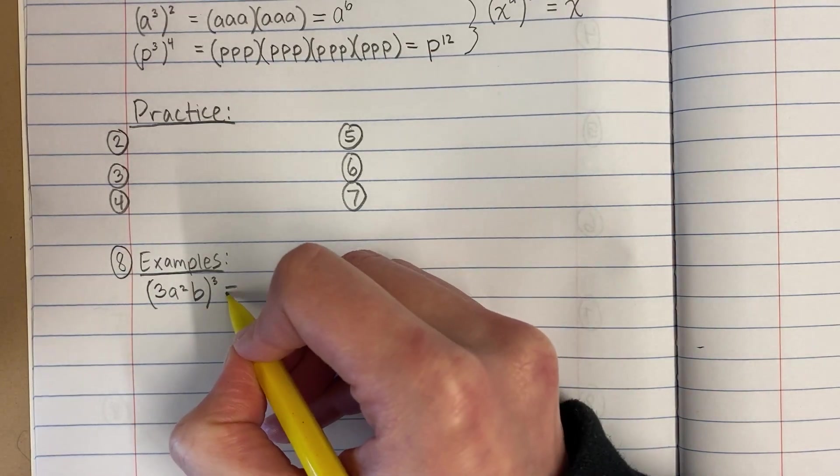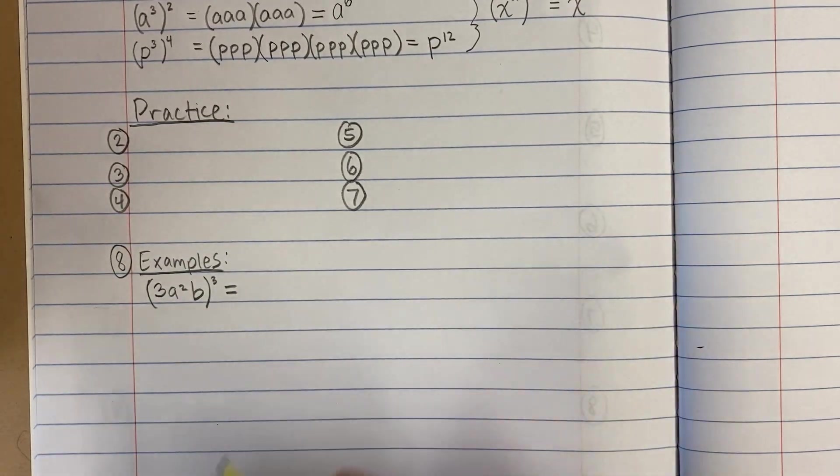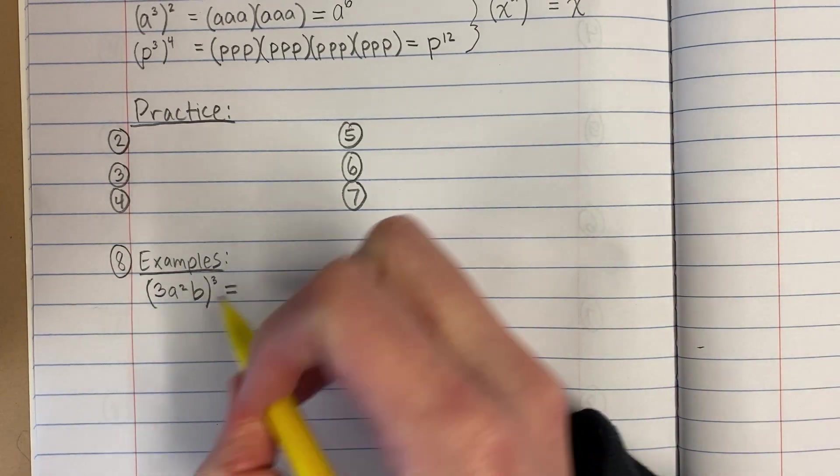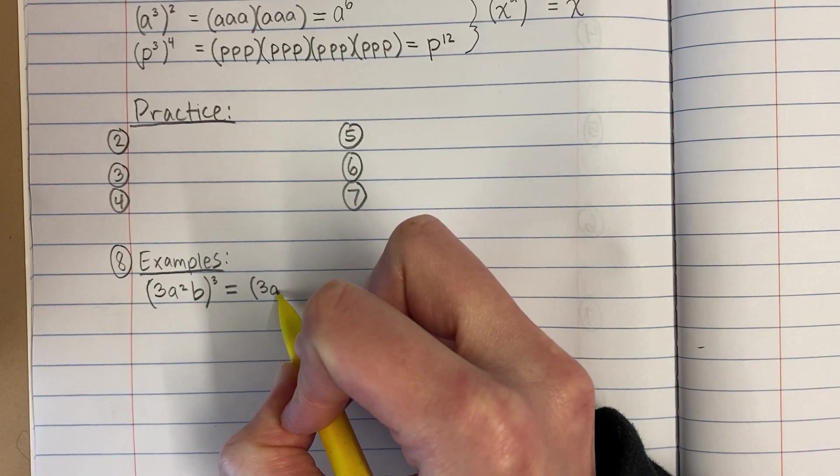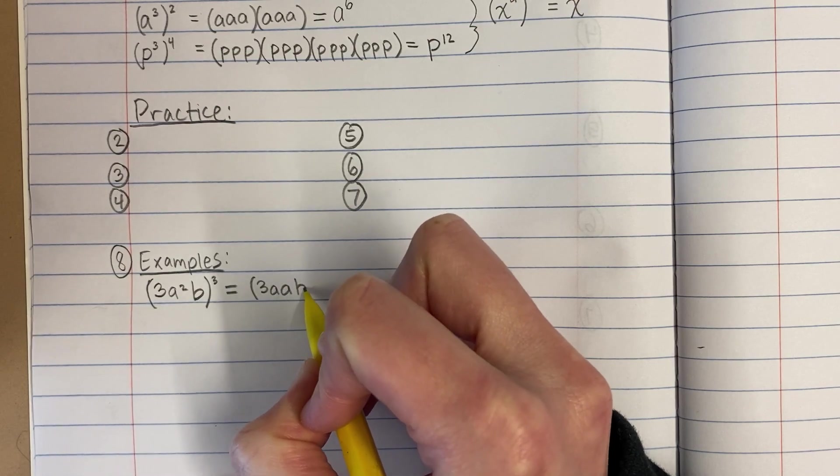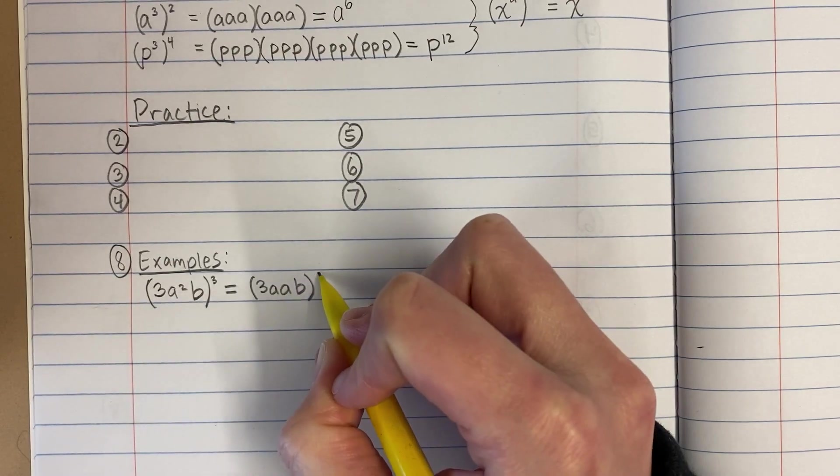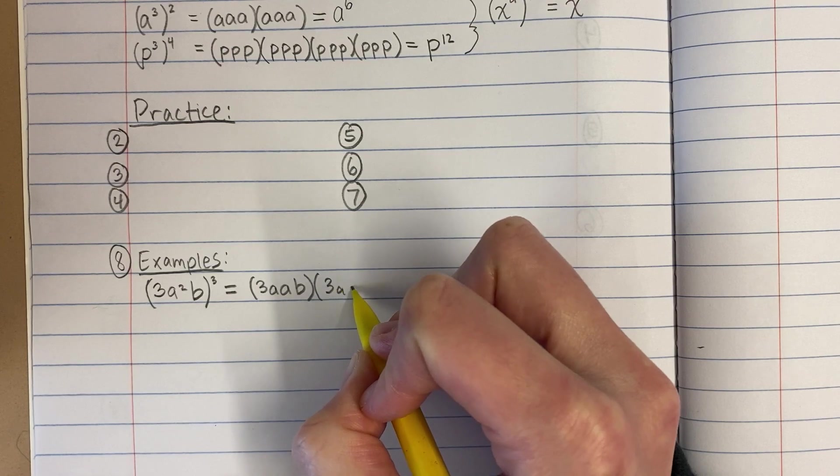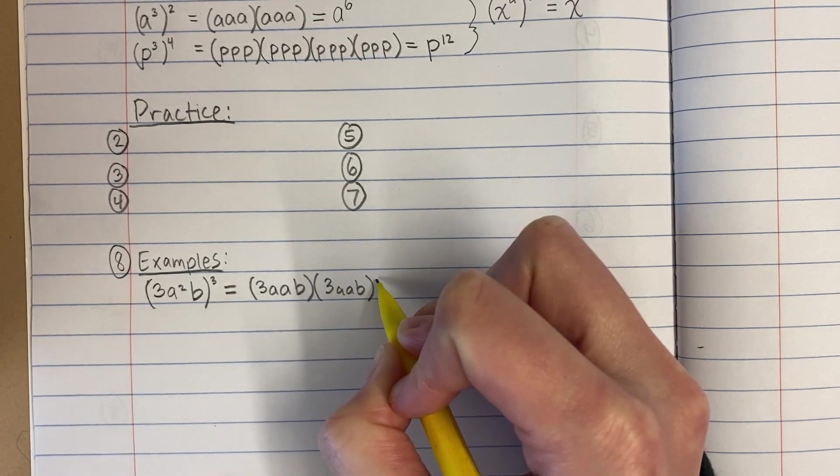Okay, again, we just want to, if we understand what this means, then we can figure out how to simplify it. So this means, inside the parentheses, I have 3 times a times a times b. And if that's all to the third power, then I'm taking that and I'm multiplying it by itself 3 times.